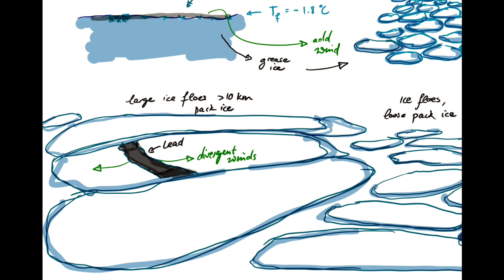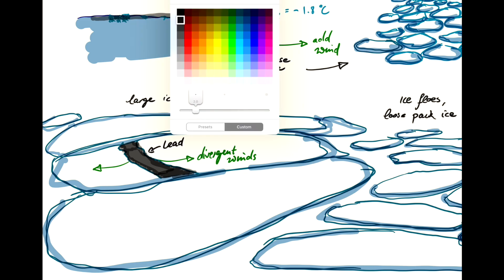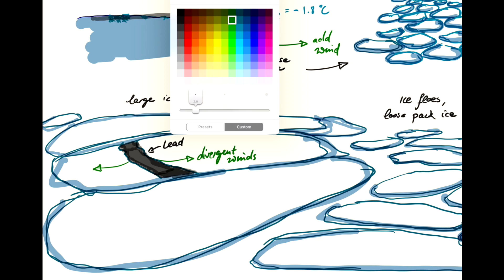And finally, if you do have divergent ice motion like that, then you somewhere else might have a convergent motion, meaning that this one flow here might ram into this other flow. So if you have convergent conditions, convergent drift.